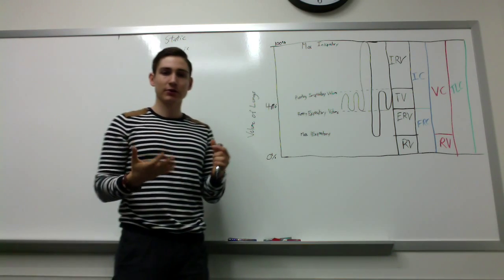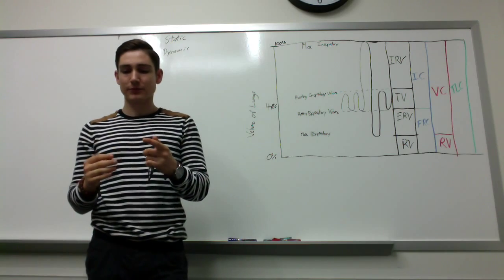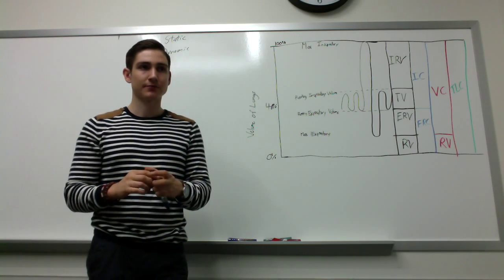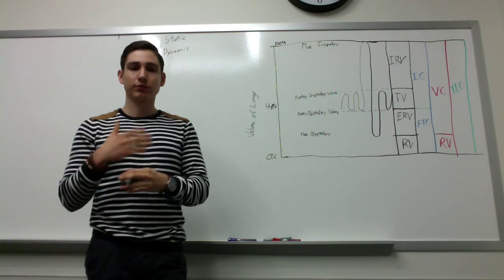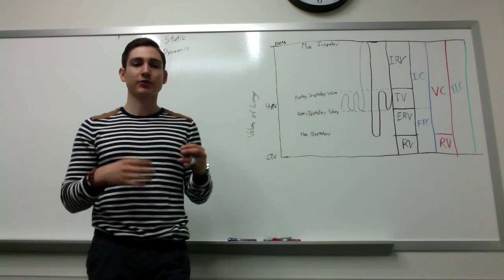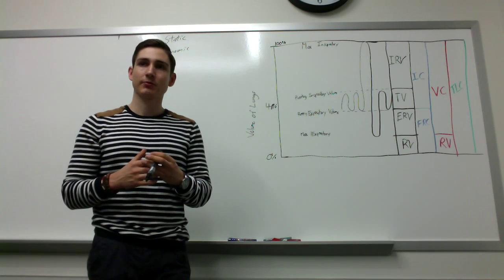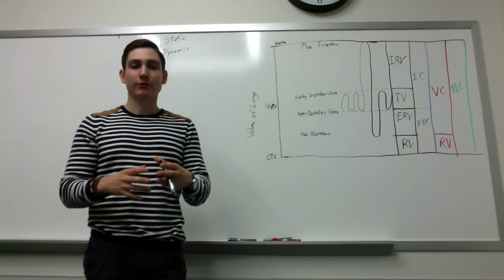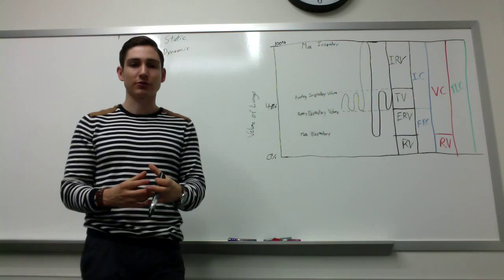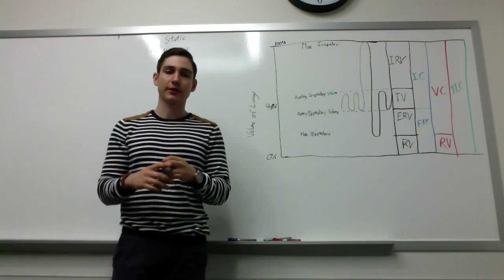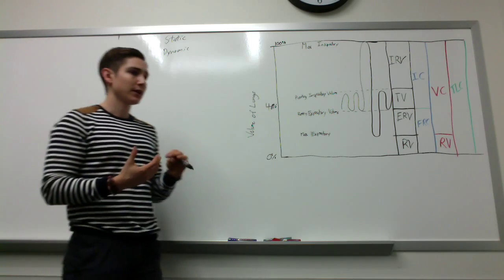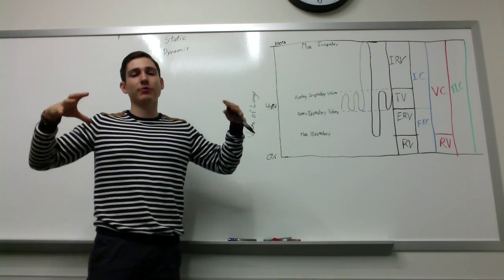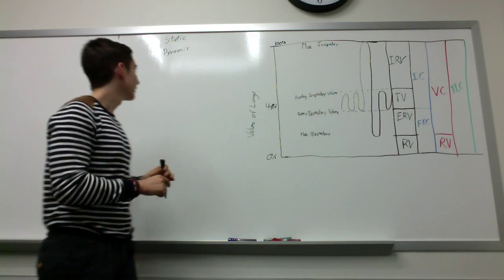With static lung mechanics, you're looking at how changes in the chest wall volume, changes in pressure, and muscle contraction all interplay to determine what's the maximum volume your chest can be and what's the smallest you can make it — so max inspiratory and max expiratory volumes. It's called static because it looks at the forces pulling the chest wall outwards and inwards when you're breathing all the way in or out, so it's in static motion.